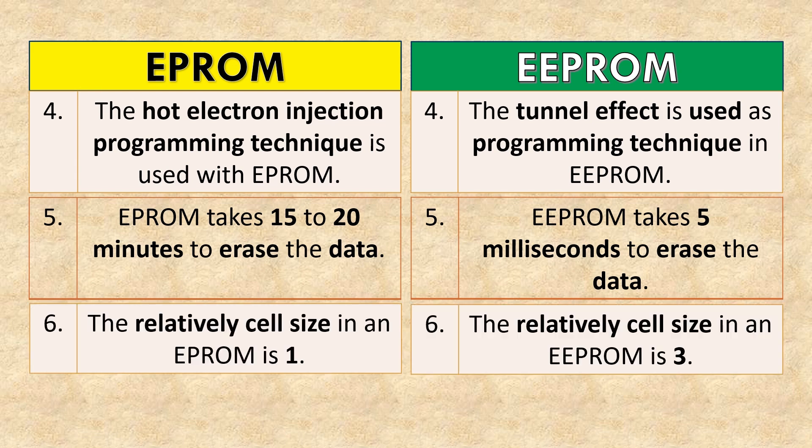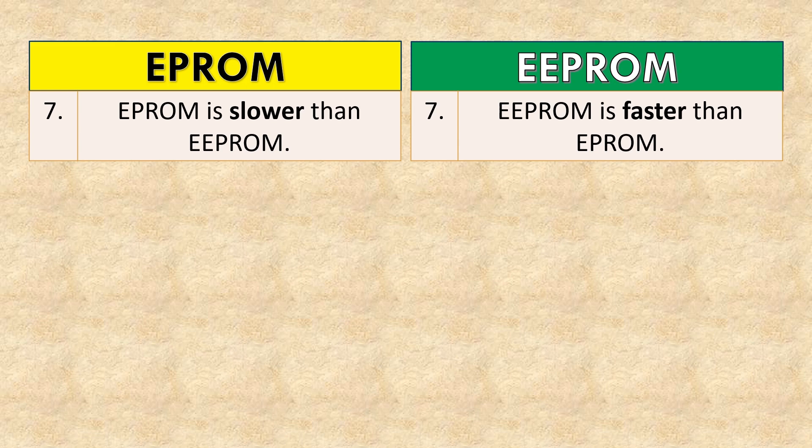The relative cell size in an EPROM is 1, while in an EEPROM it is 3. EPROM is slower than EEPROM.